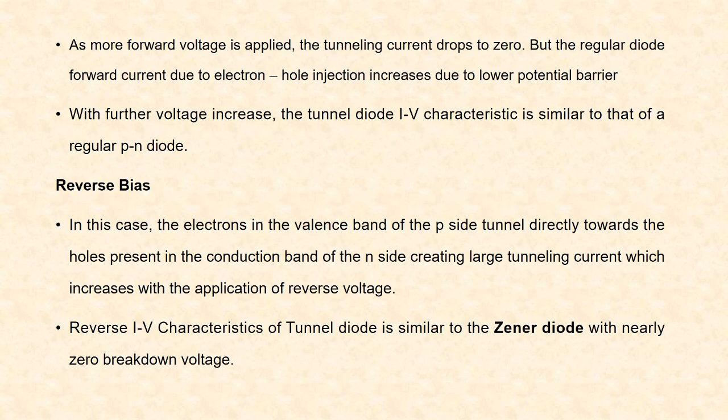As more forward voltage is applied, the tunneling current drops to zero. But the regular diode forward current due to electron-hole injection increases since the potential barrier is lower. With further increase in voltage, the tunnel diode I-V characteristics is similar to that of a regular p-n junction diode.